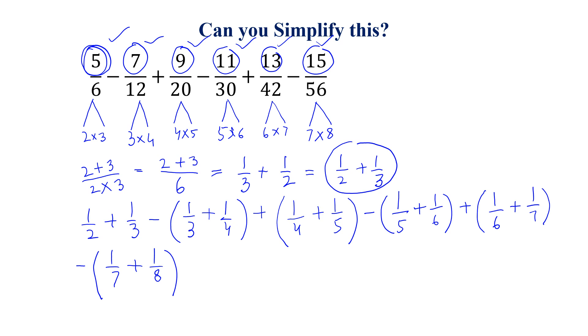Now, if we look at this, we can cancel plus 1 over 3 with minus 1 over 3, and similarly minus 1 over 4 from here, plus 1 over 4,